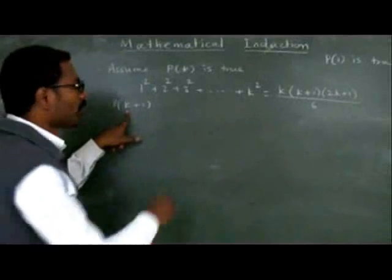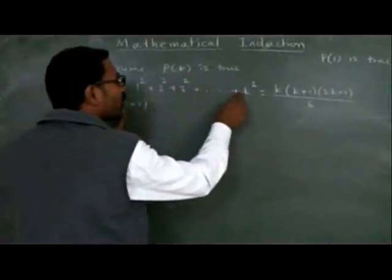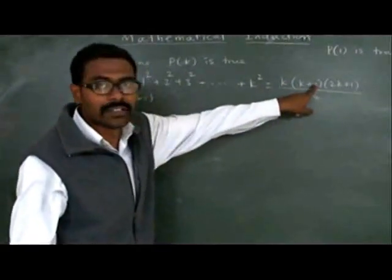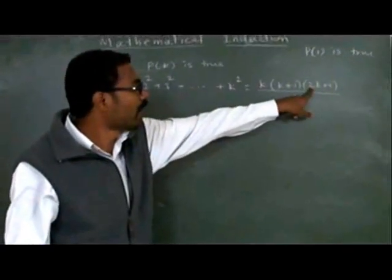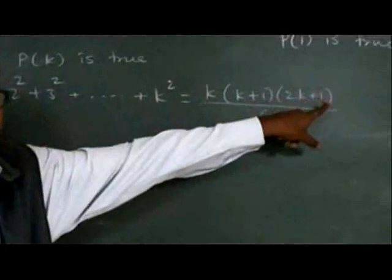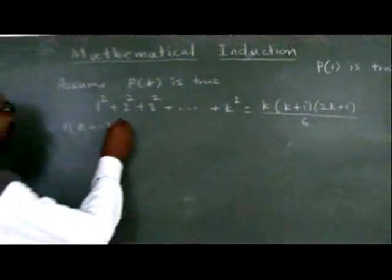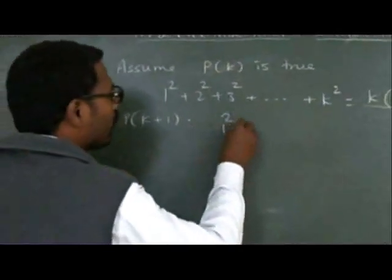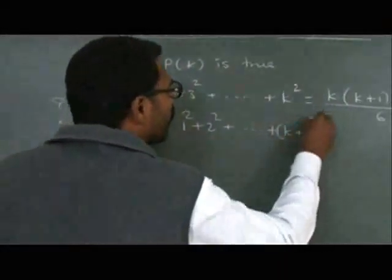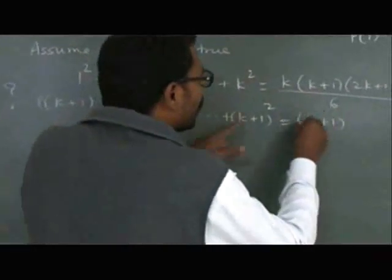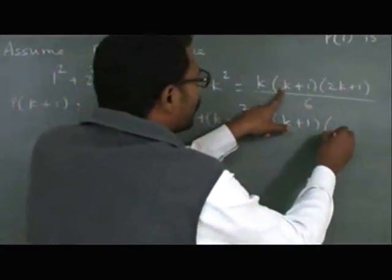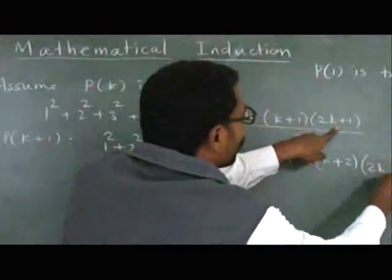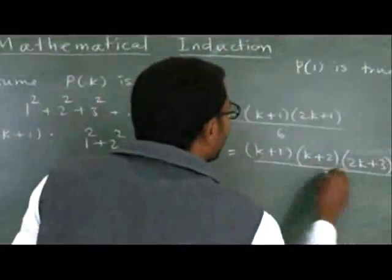What will P(k+1) be? P(k+1) states that 1² + 2² + 3² + ... + (k+1)² should equal (k+1)(k+2)(2k+3)/6 — replacing n with k+1, so n+1 becomes k+2, and 2n+1 becomes 2(k+1)+1 = 2k+3. This is what we want to prove. If this holds, we can say P(k+1) is true.